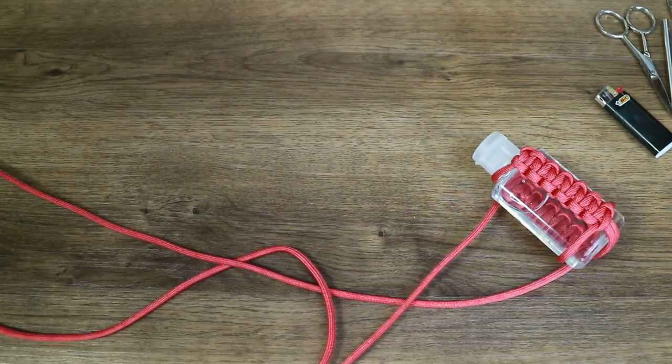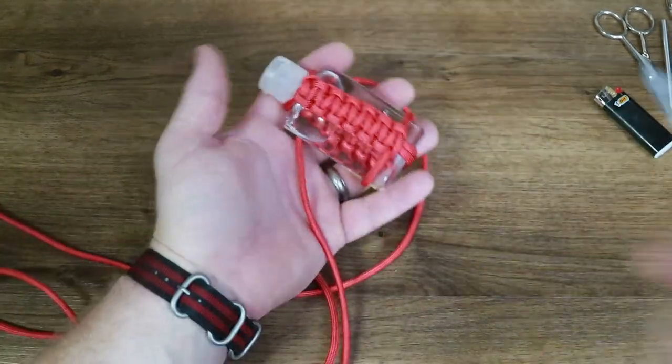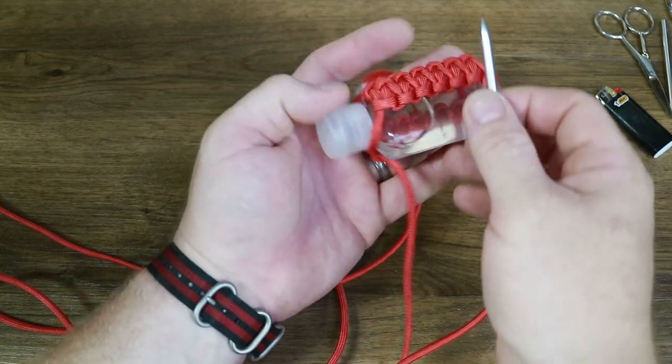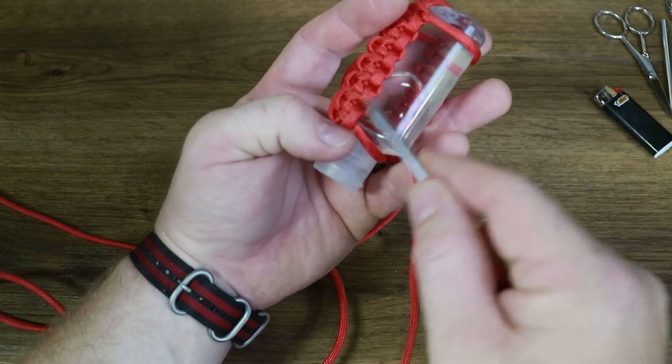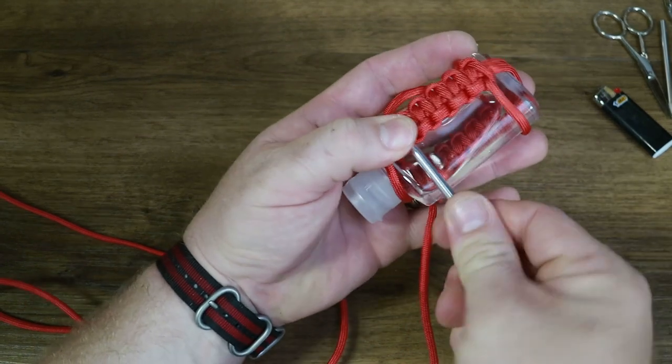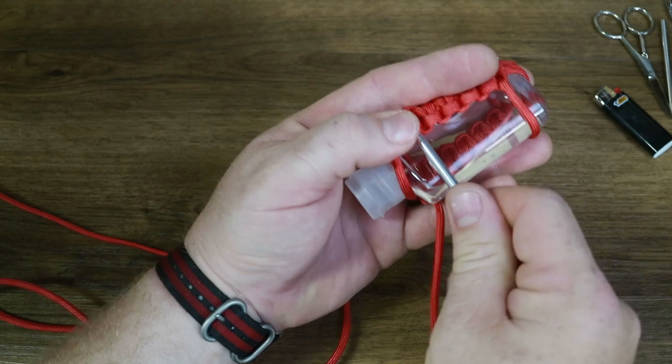Now that we've reached the top, we have to stop and start stitching. I'm going to demonstrate using the fid first. Thread the fid onto the end of your paracord and run it through the underside of the second knot on the other side of the bottle, pulling it all the way through until it is snug.